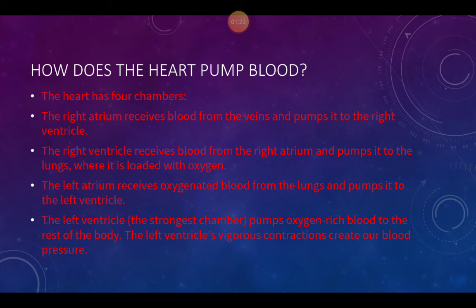How does the heart pump blood? The blood returns to the heart after delivering oxygen to all the cells. The heart has four chambers — also called rooms or spaces — the right atrium, right ventricle, left atrium, and left ventricle. All the blood from the body comes back to the right atrium; it receives blood from the veins and pumps it to the right ventricle.